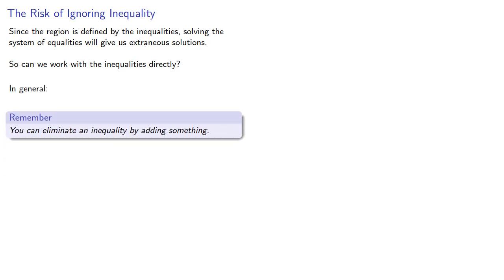In general, you can eliminate an inequality by adding something. So an inequality like 3x plus y less than or equal to 15 could be eliminated by adding a non-negative quantity.